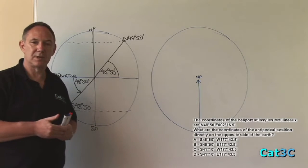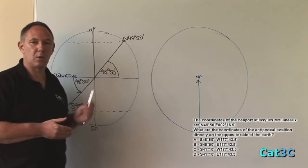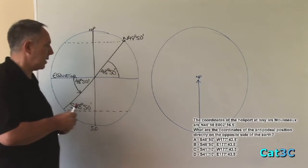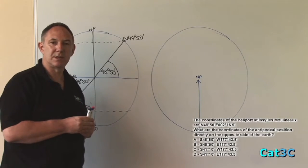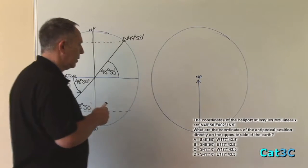However, they've both got different longitudes. So we have to now work out what the longitude will be as well. Well, we know that the longitude of EC Le Moulinot is at east 2 degrees 16.5 minutes, which is approximately there.